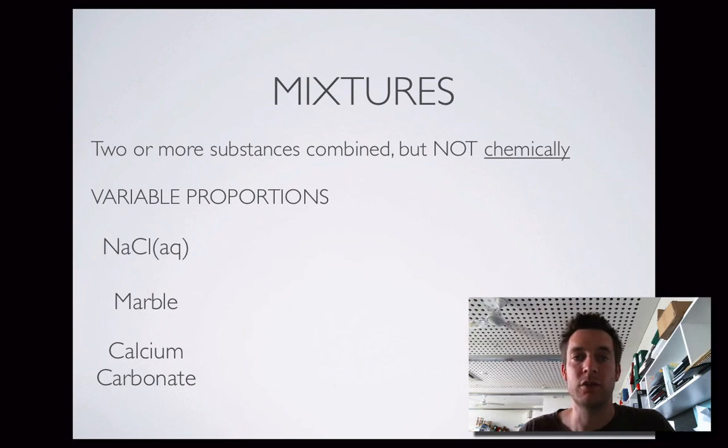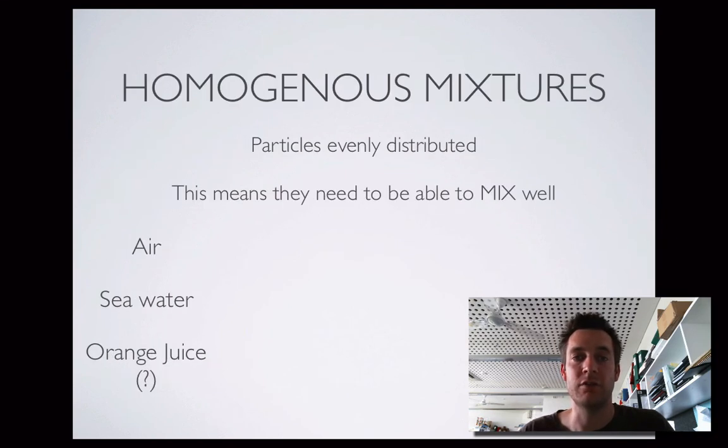All that's left to talk about is the two different kinds of mixture, and they are homogeneous and heterogeneous. Homogeneous mixtures are ones in which the particles of the mixture are evenly distributed. So, the things have to be able to mix well with one another. Mixtures of gases tend to form homogeneous mixtures, and so do mixtures of liquids, and so do solids that dissolve in liquids. In air, we've got oxygen, nitrogen, we've got carbon dioxide, and a few other gases.